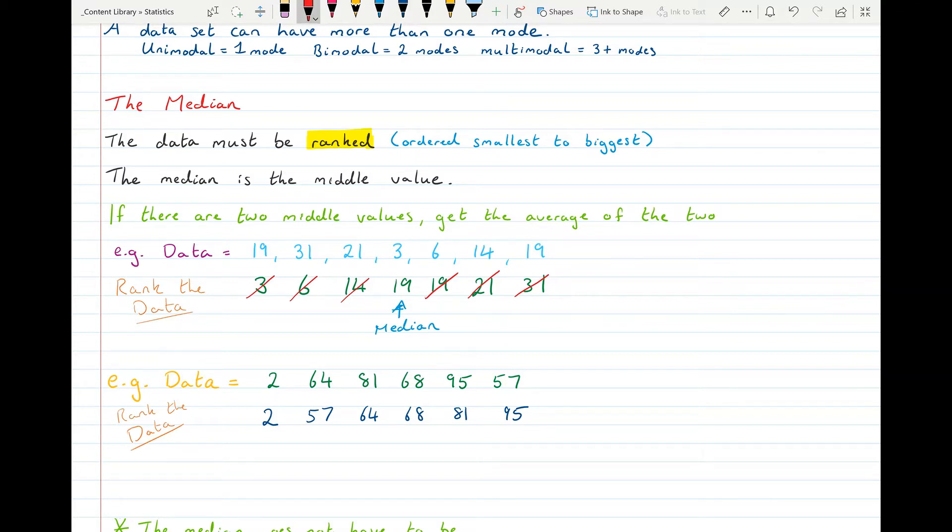And let's start working our way in towards the middle. Cross off the first, cross off the last, second, second last. And now I have two values left in the middle. So what I need to do is I need to get the average of those two values. So I go 64 plus 68 divided by 2, that'll give me 66. So the median value is 66.